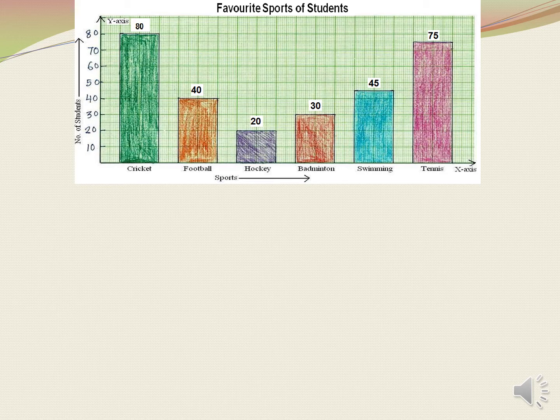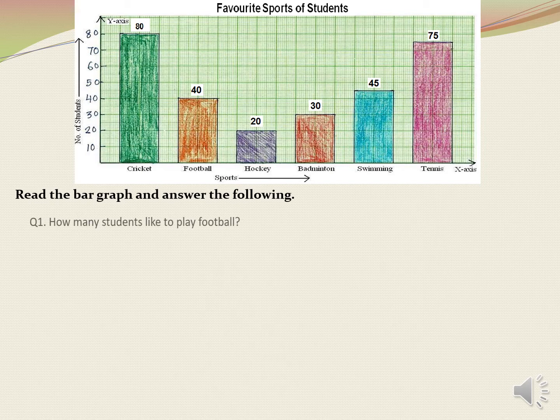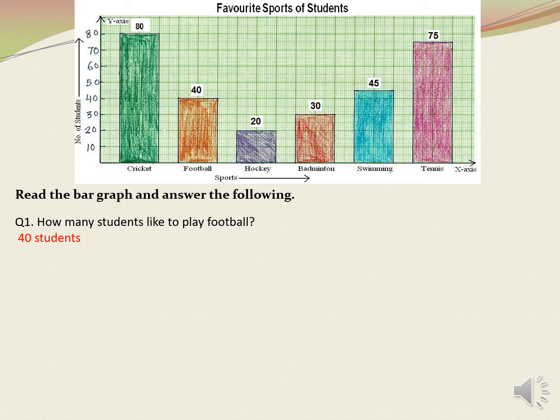The number of students is on y-axis with an interval of 10, so the numbers are 0, 10, 20, 30, 40, 50, 60, 70, 80. First question: how many students like to play football? Let's see the bar which represents football — the brown bar. The height of this brown bar reaches up to 40. So our answer will be 40 students. Children, please remember you need to write the complete answer — you cannot just write 40, because 40 is just a number. To tell what that 40 means, you need to write 'students' along with it. So the answer will be 40 students.